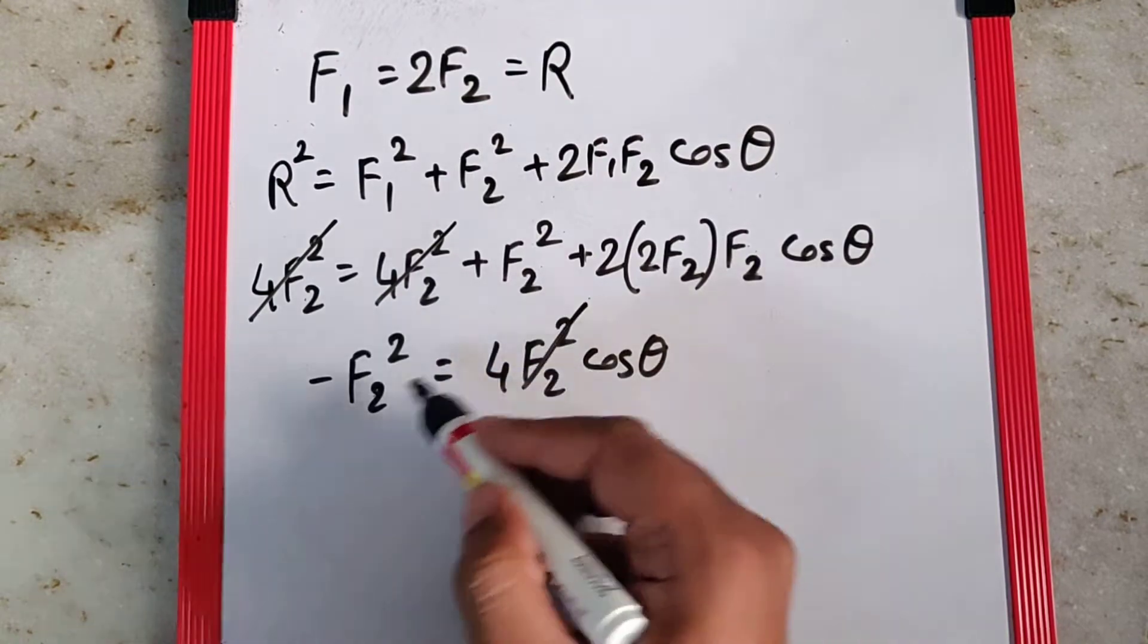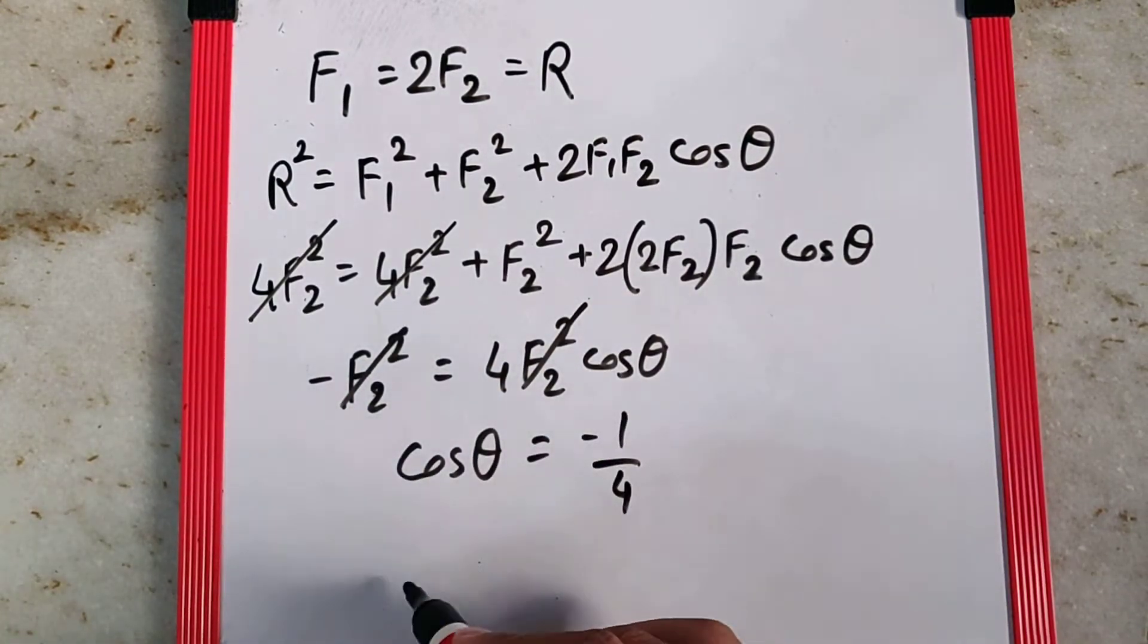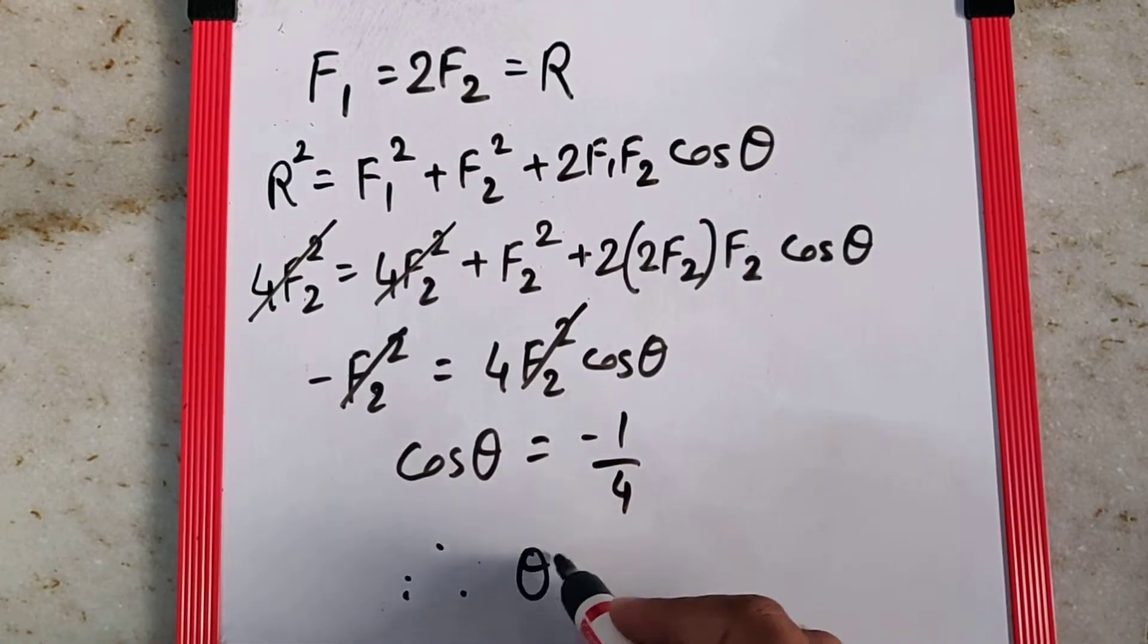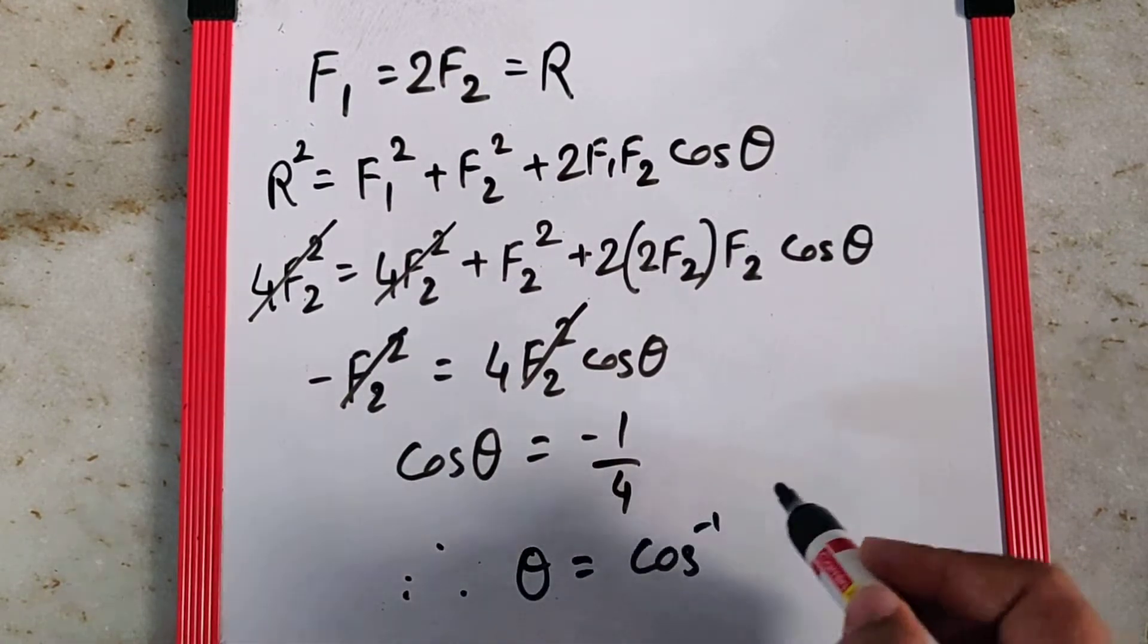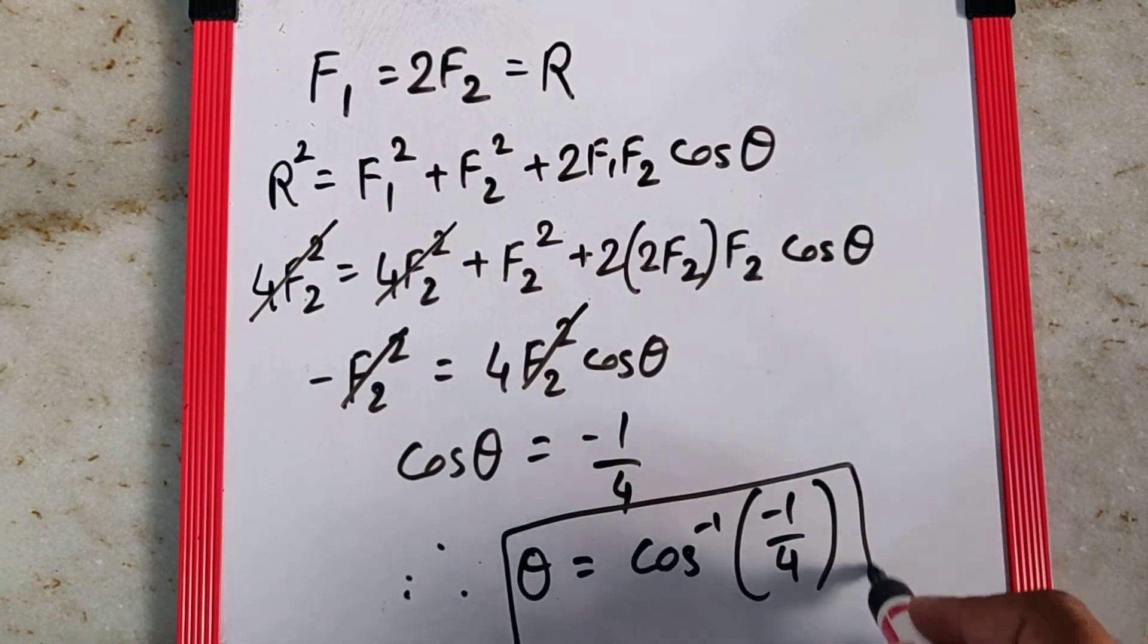Now again F2 square gets cancelled, that gives cos theta as minus 1 by 4, which means theta is cos inverse of minus 1 by 4, which is the final answer.